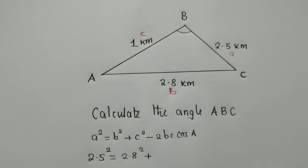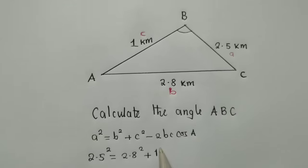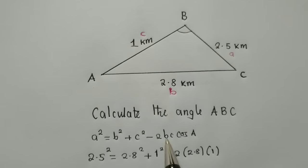Is equal to small letter b is 2.8 and the power 2 from the formula. Plus, what about c there? Do we have c, small letter c? That's a 1. Power 2. Minus 2. Open bracket to show that we are multiplying. Our b is a 2.8 and our c is a 1. Because here there is bc and cos B here.